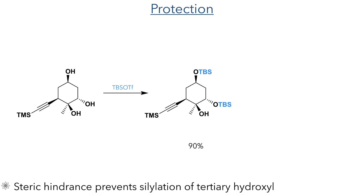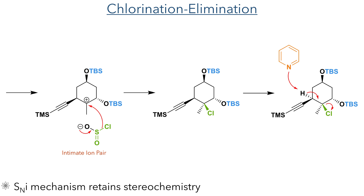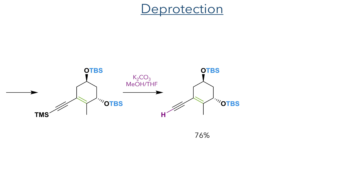In the next step of the synthesis, the triol was selectively protected using TBS triflate. The steric bulk of the TBS group prevented it from adding to the sterically hindered tertiary alcohol, allowing for the selective protection of the secondary hydroxyl groups. The remaining free hydroxyl group was then reacted with thionyl chloride, which acts as an electrophile and activates the oxygen. This then leaves to form an intimate ion pair between the sulphurochloridite and the tertiary cation. The chloride then attacks this cation in an SNi mechanism which retains the stereochemistry. This can then undergo an elimination reaction promoted by pyridine, which acts as a base to deprotonate the hydrogen atom anti to the chloride, forming the desired alkene. With the framework of the A ring now complete, the TMS group was deprotected using potassium carbonate in methanol and THF.